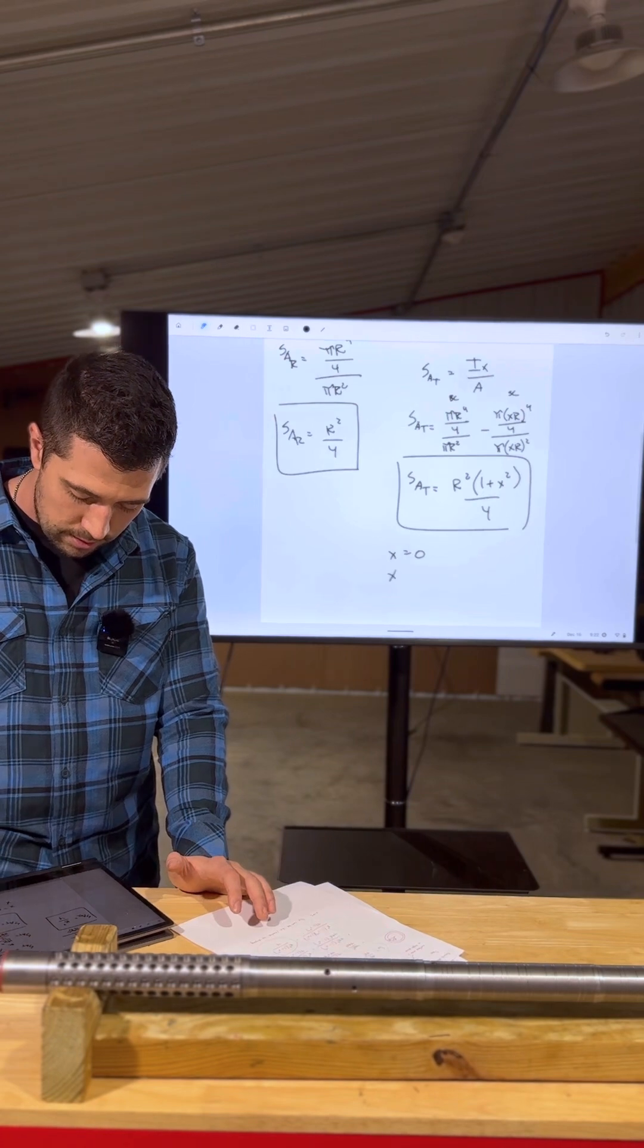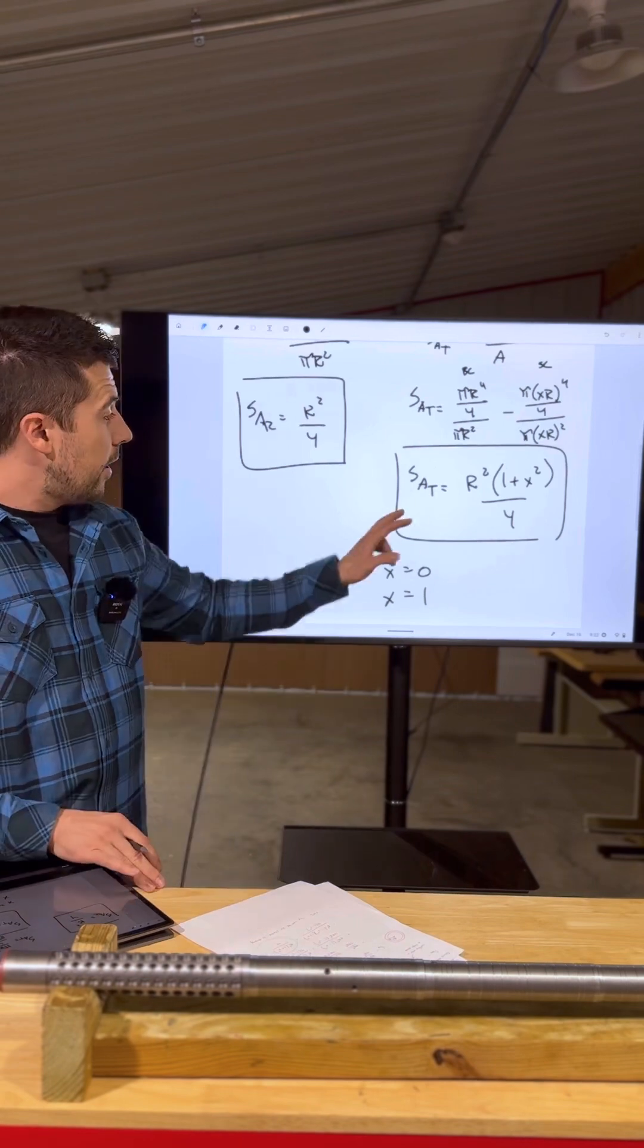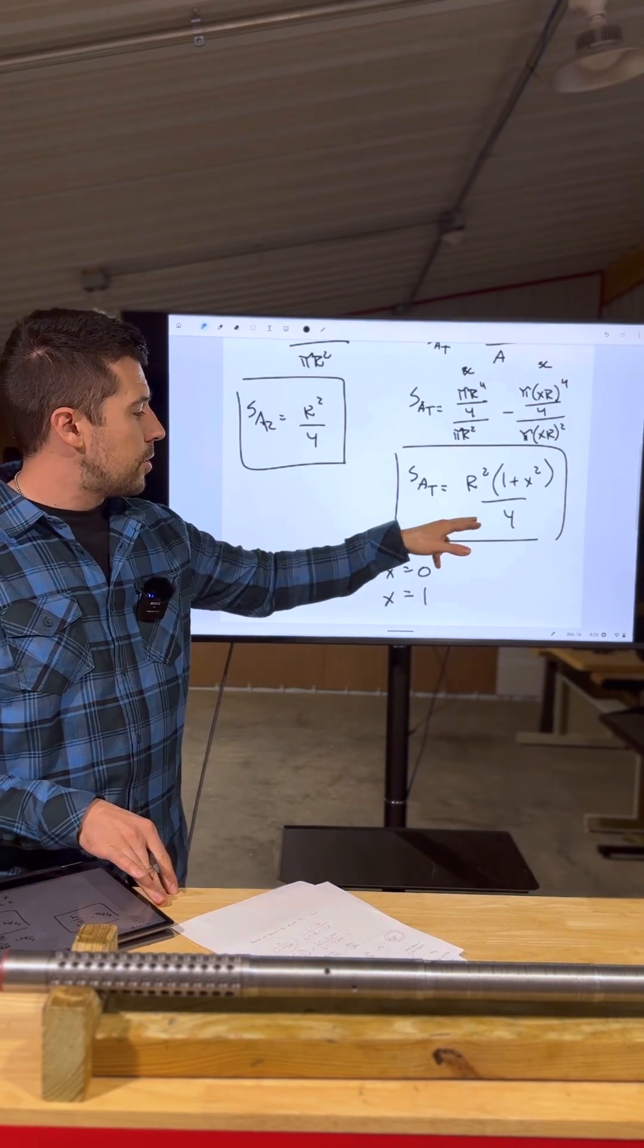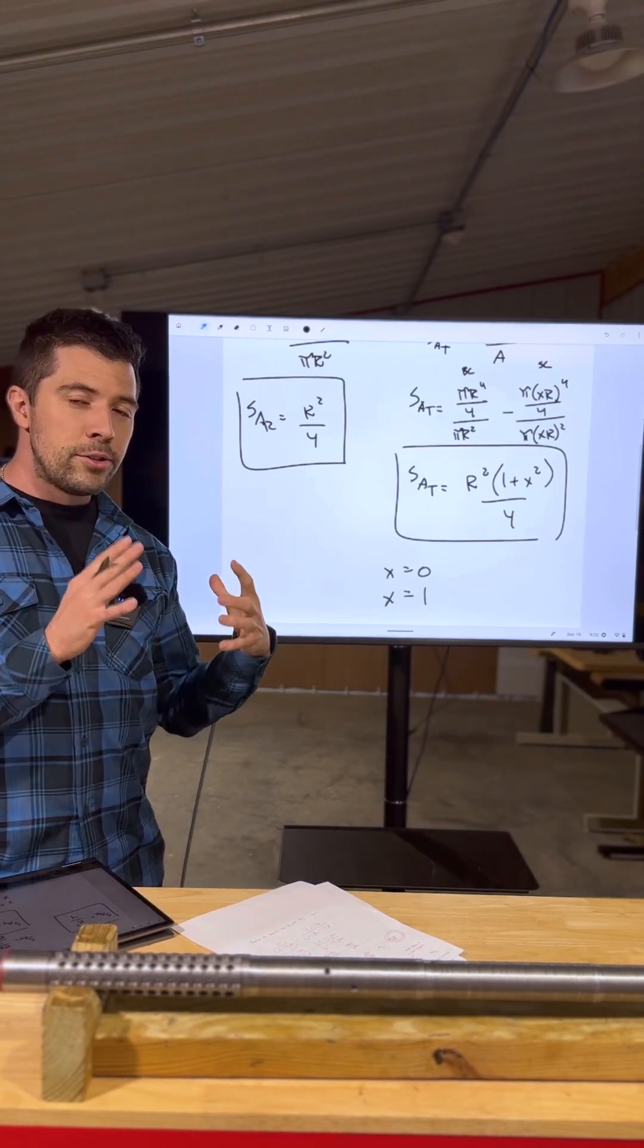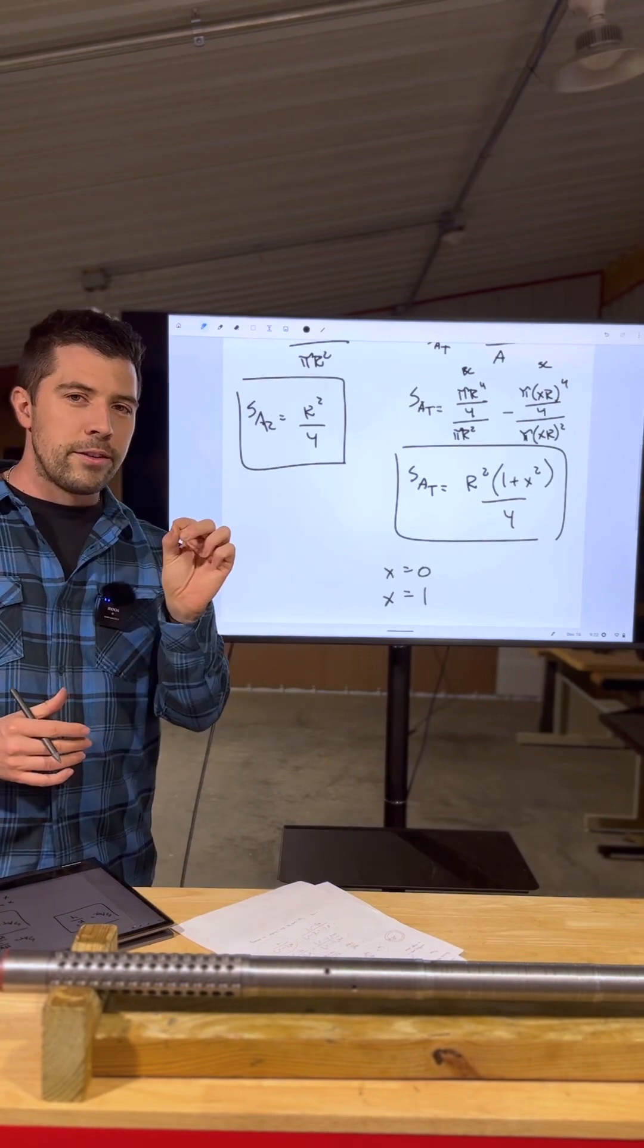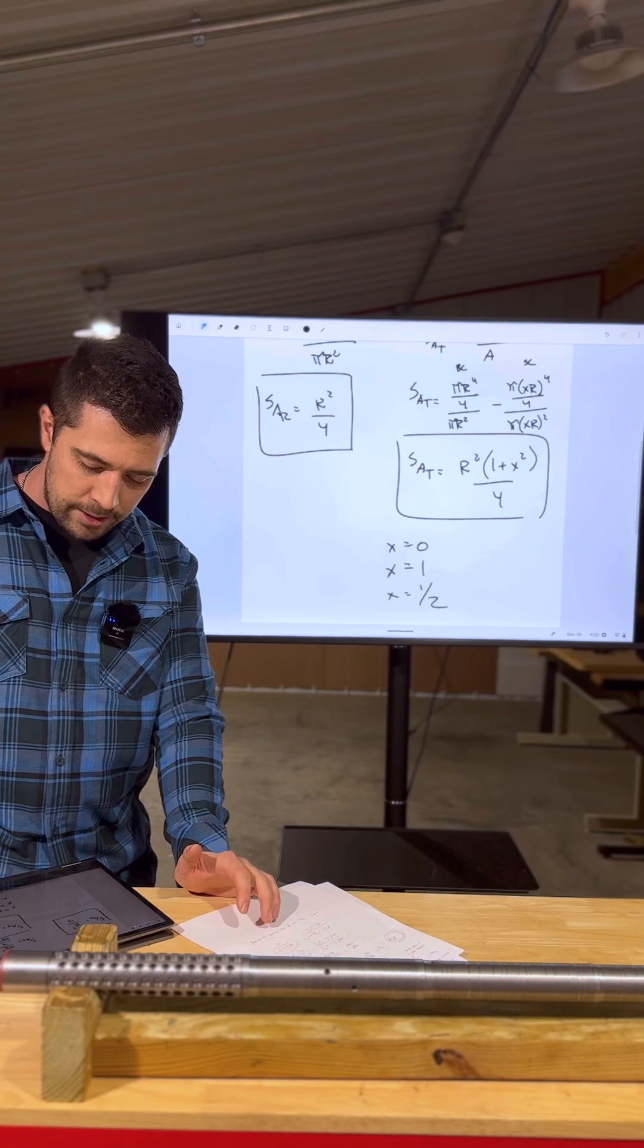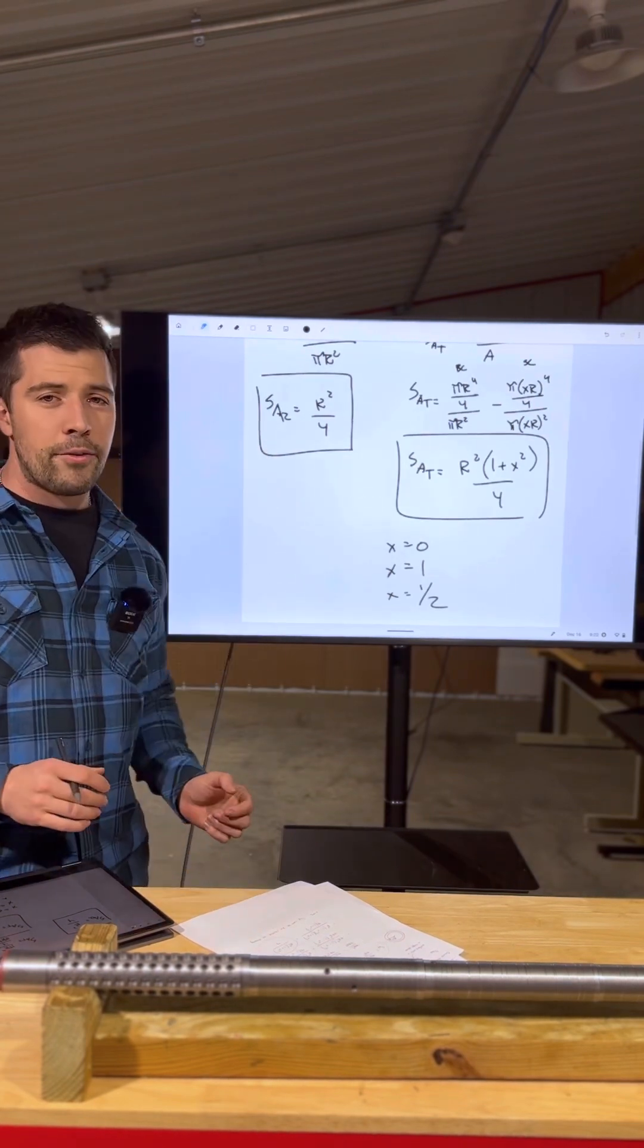If x is equal to one, well, at that point we see that a tube will be two times as strong as a rod. But this is impossible because this would require that our ratio for the ID of our tube to be identical to the OD or R of our tube. And that would require an infinitely thin wall, not practical. However, if we do look at x equals half, now we see that a tube will be 50% stronger than that of a rod.